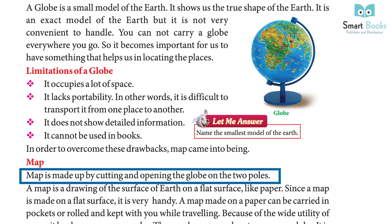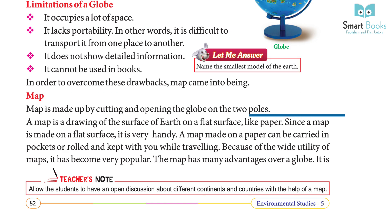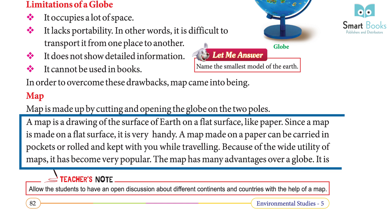A map is made by cutting and opening the globe at the two poles. A map is a drawing of the surface of the earth on a flat surface like paper. Since a map is made on a flat surface, it is very handy. A map made on paper can be carried in pockets or rolled and kept with you while traveling.